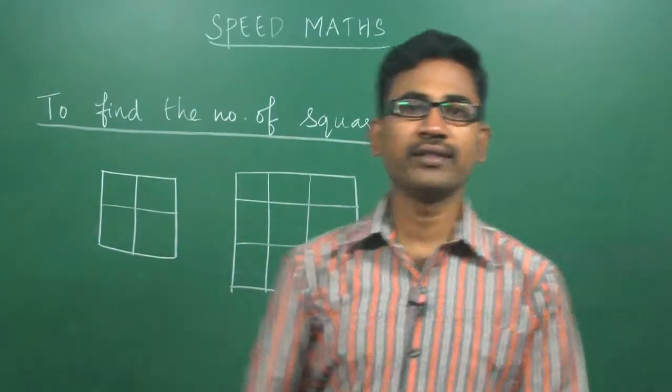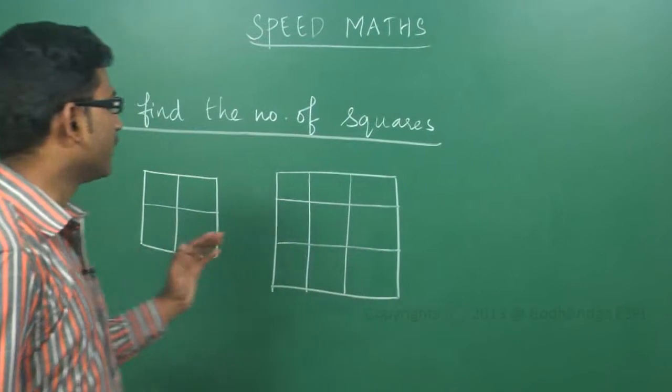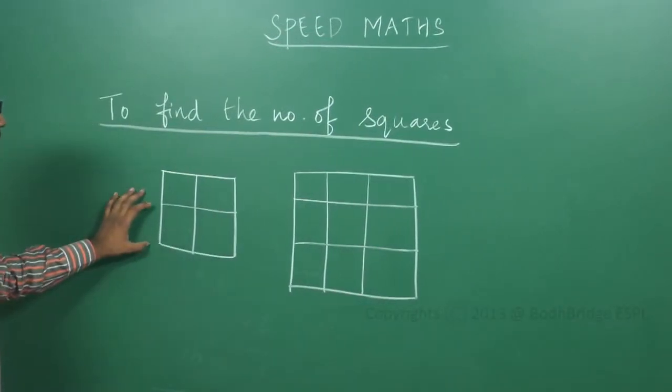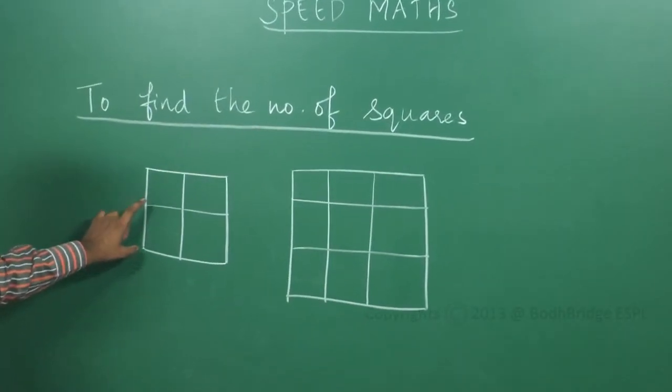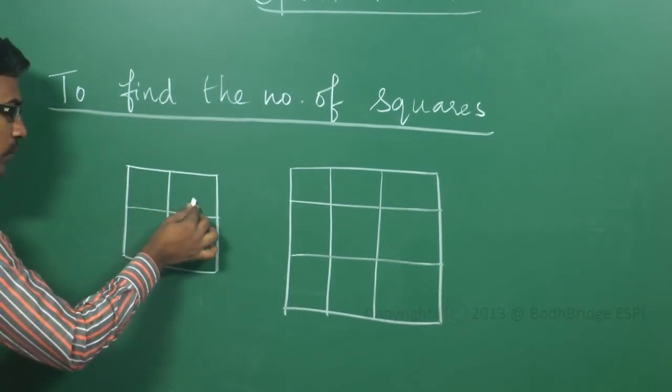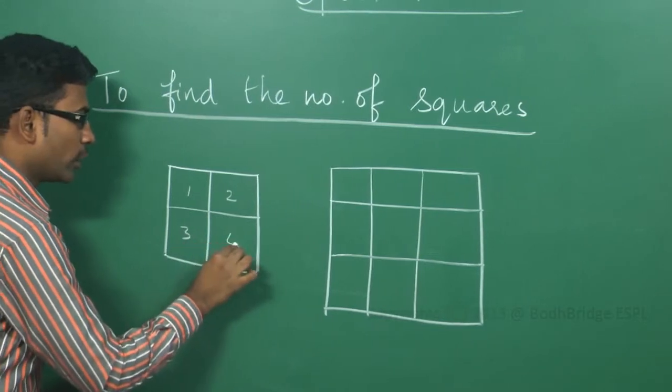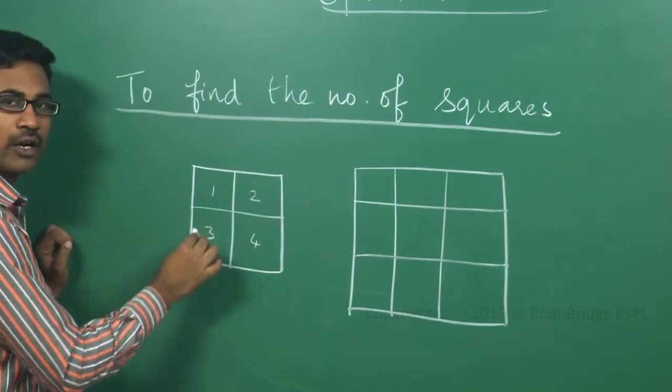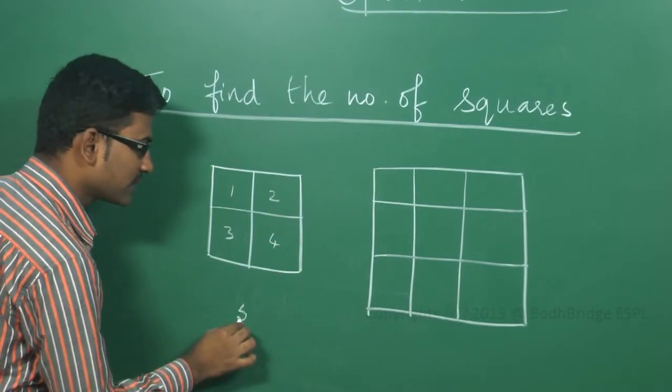The next one is about finding the number of squares in a given diagram. If this is a diagram, they are asking you to find what is the number of squares present. You can count it 1, 2, 3 and the whole large square. The number of squares is 5.